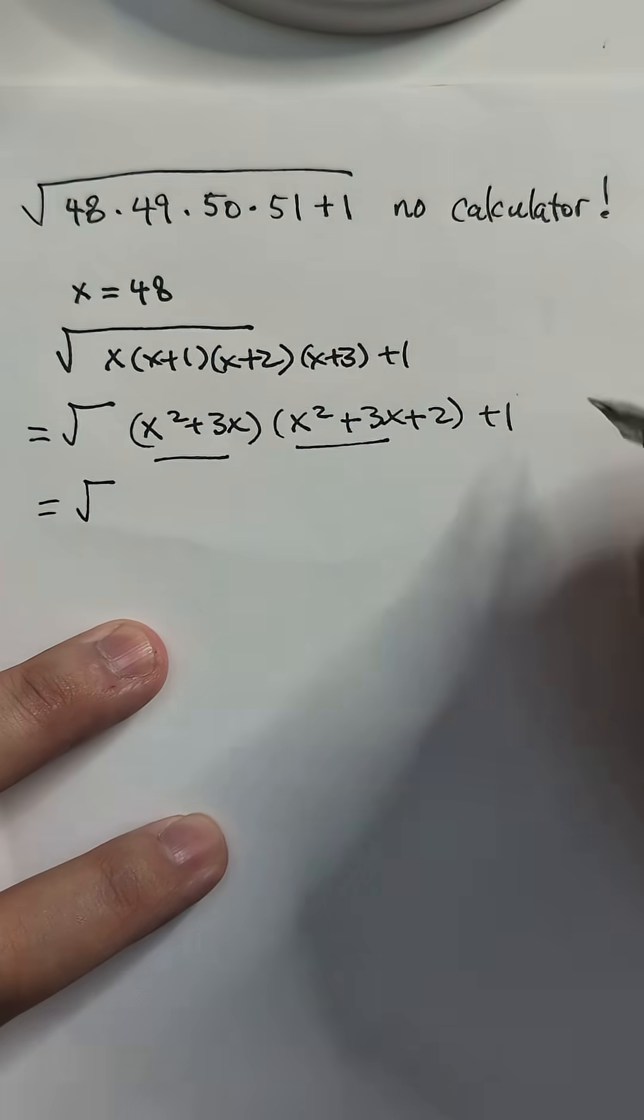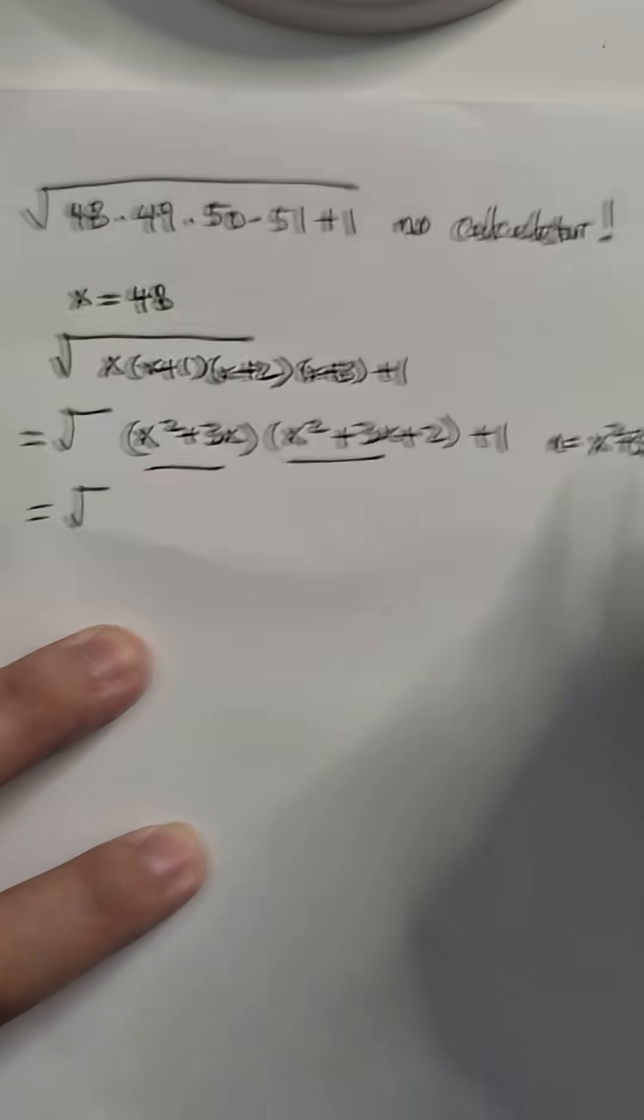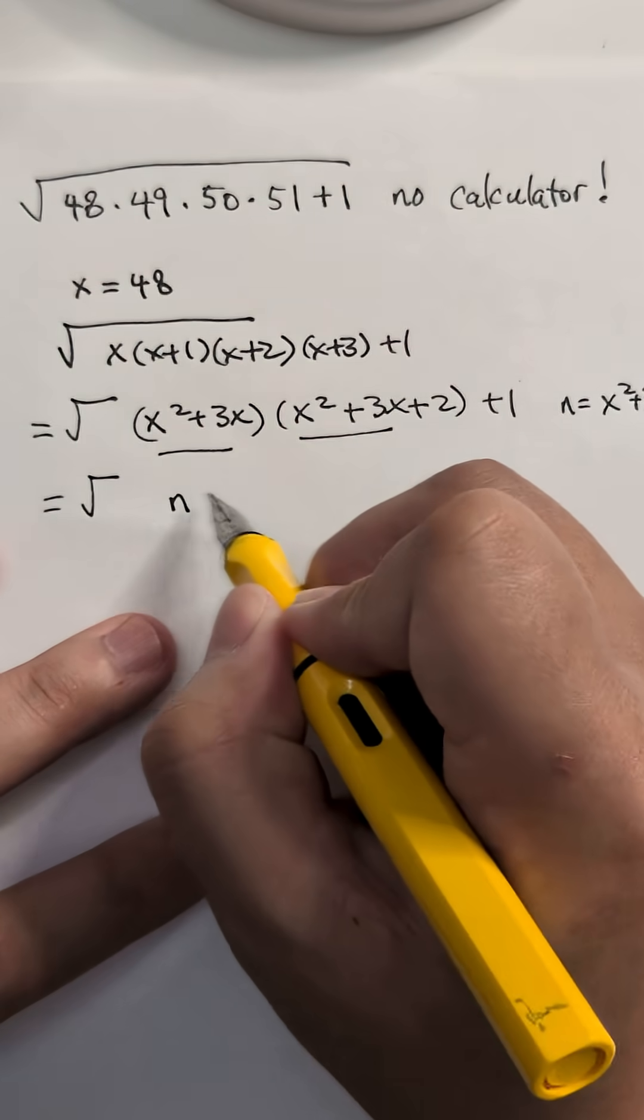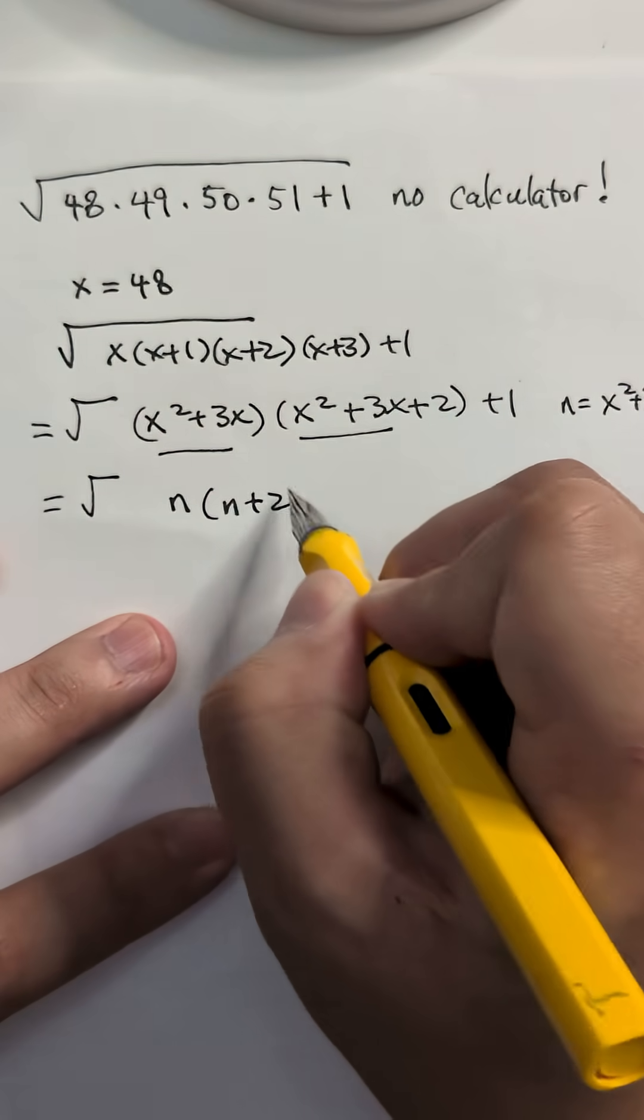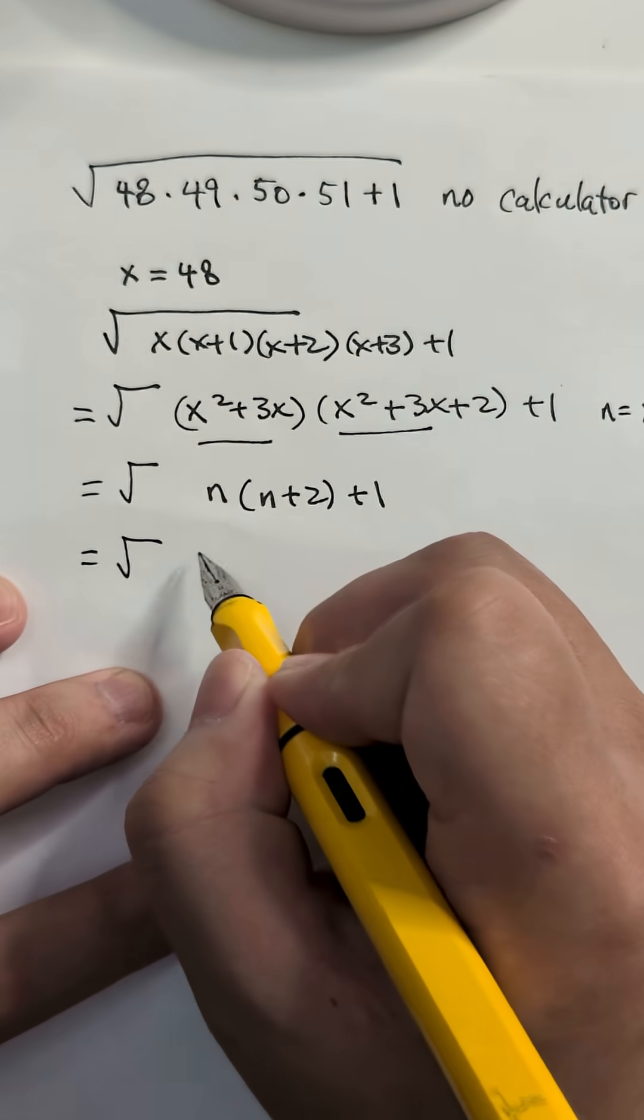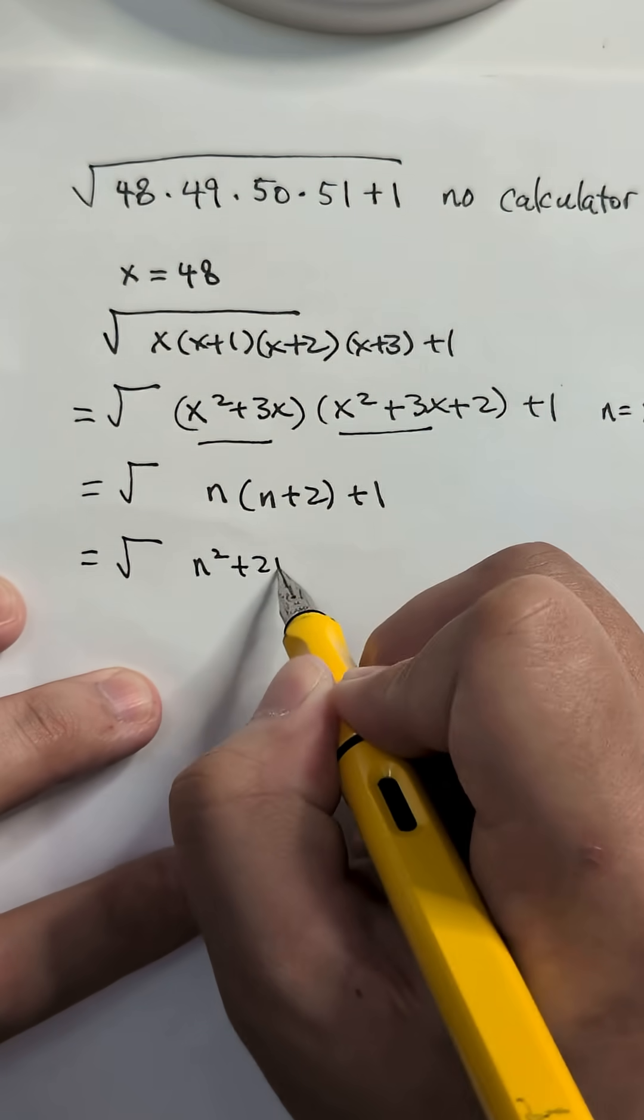So instead of that, let's call n equals x squared plus 3x here. Just a new variable, right? So it looks like n, n plus 2, plus 1. And what does that look like? It actually looks like n squared plus 2n plus 1.